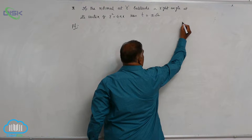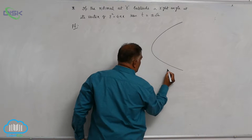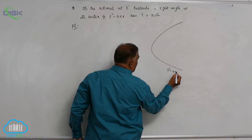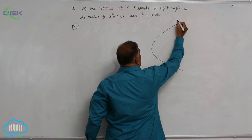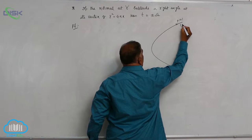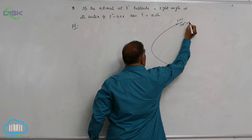Now, let us draw the diagram. y square equal to 4ax. Let us consider a point P(t). This is nothing but at square comma 2at.